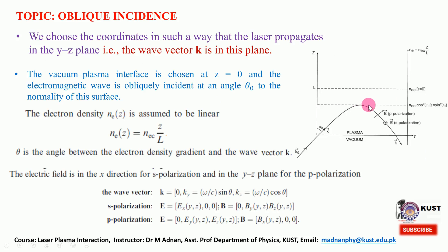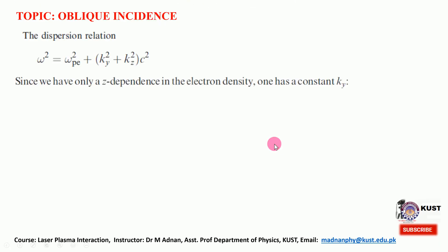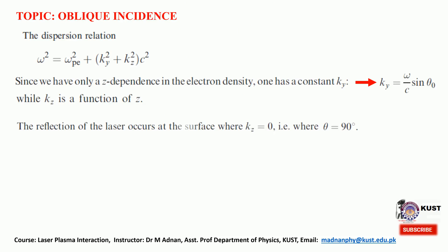We need to determine whether this point corresponds to epsilon equal to zero, or epsilon equal to sine squared theta_0, or some expression involving cosine squared theta_0. The reflection point is where kz equals zero — where there is no further propagation along that direction and the wave is reflected. Equivalently, this is where the local propagation angle becomes 90 degrees.